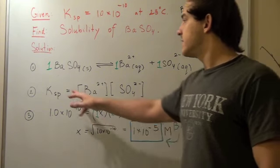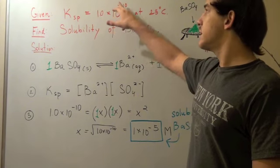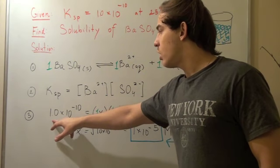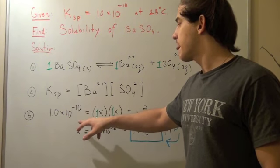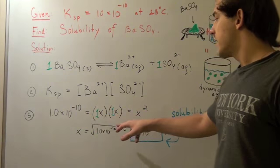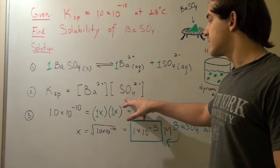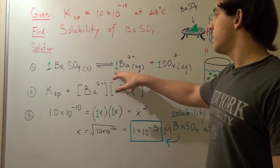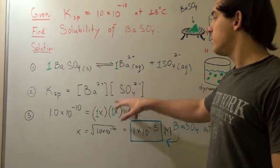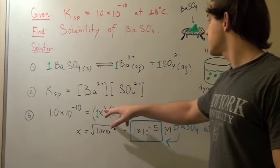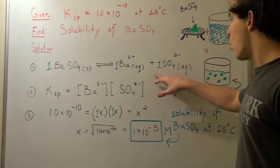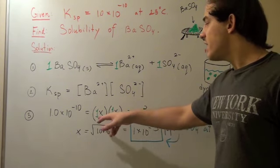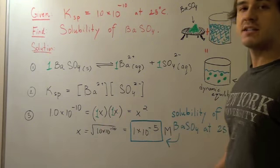Since Ksp equals 1.0 times 10 to the negative 10, and both concentrations are x, we write: 1.0 times 10 to the negative 10 equals x times x. Since there's 1 mole of barium and 1 mole of sulfate, we get 1x times 1x equals x squared.